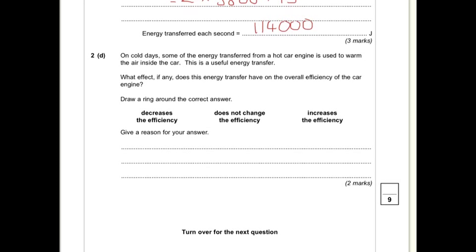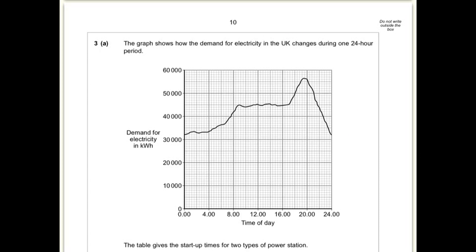So on cold days, some of the energy transferred from the hot car engine is used to warm the air inside the car. It's a useful energy transfer. What effect, if any, does the energy transfer have on the overall efficiency of the car engine? Well, if you think about what efficiency is, efficiency equals useful output energy divided by total input energy. So the total input energy stays the same. But in this case, some of the energy is used to warm the car. So this is energy that's normally just radiated out and is therefore wasted. But now it's being kept and becomes more useful. So if it becomes more useful, that means it's going to increase the efficiency.